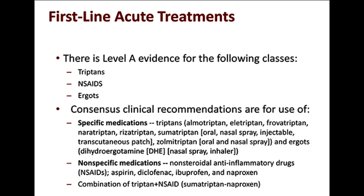There is level A evidence for the following classes of acute treatment: triptans, NSAIDs, and ergots. Consensus clinical recommendations are for the use of those major categories — triptans, dihydroergotamine (DHE), nonspecific non-steroidal anti-inflammatories, and combinations of triptans and NSAIDs.